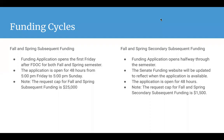Now on to funding cycles. Each fall and spring semester we will have two funding cycles. There's the fall and spring subsequent funding that will be at the beginning of the semester. This funding application will open the first Friday after FDOG for both the fall and spring semester. The application is open for 48 hours, from 5 p.m. Friday to 5 p.m. Sunday. The request cap for fall and spring subsequent funding is $25,000.